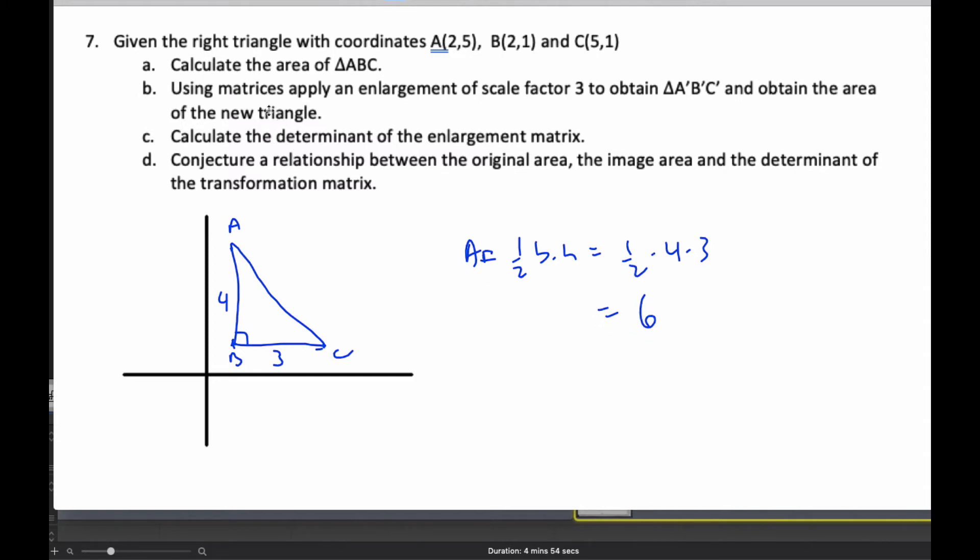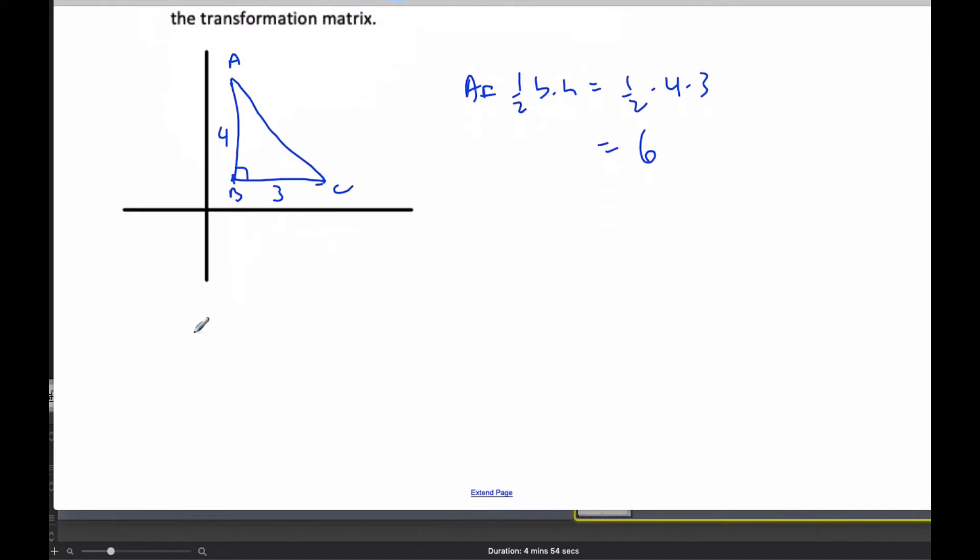Now using the matrices, apply an enlargement of scale factor 3, obtain a new triangle. So if we're going to do that, my enlargement matrix is going to be 3, 0, 0, 3.